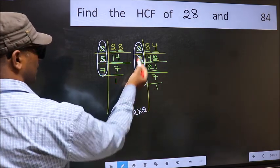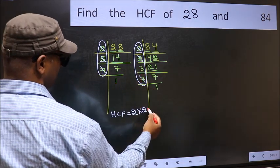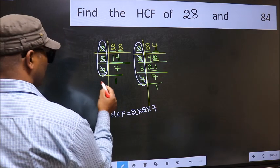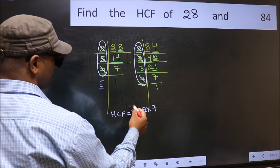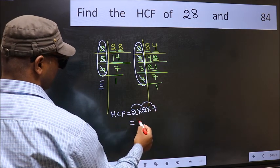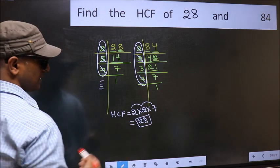Next number 7, do we have 7 here? Yes, so cut 7 right here. No more numbers have been left out. So our HCF is 2 times 2, 4 times 7, 28 is our HCF.